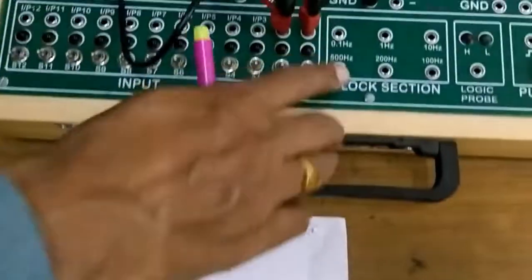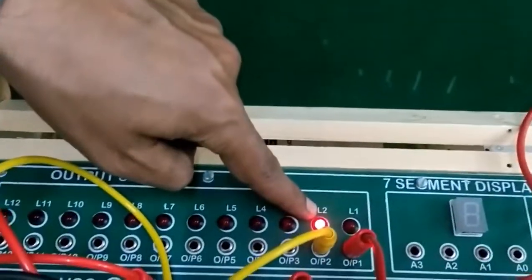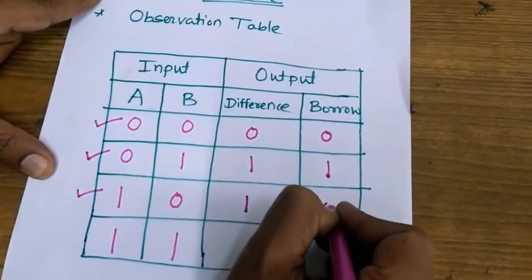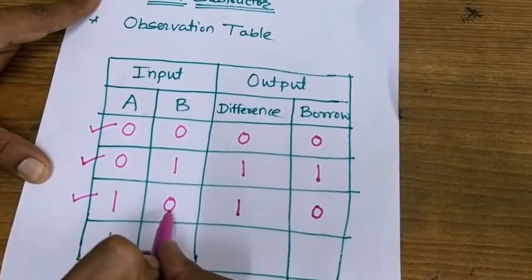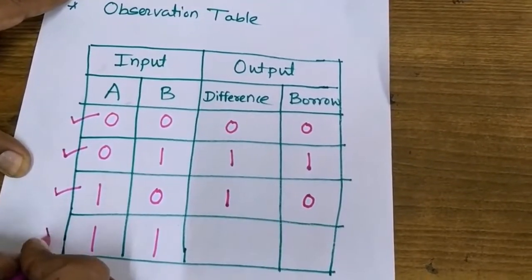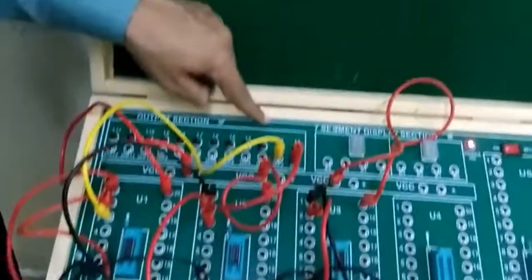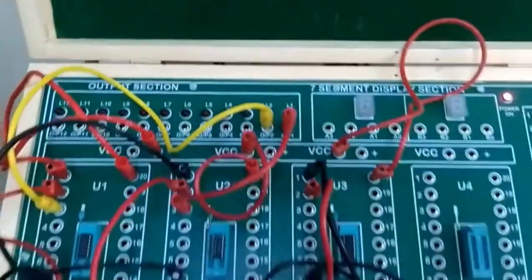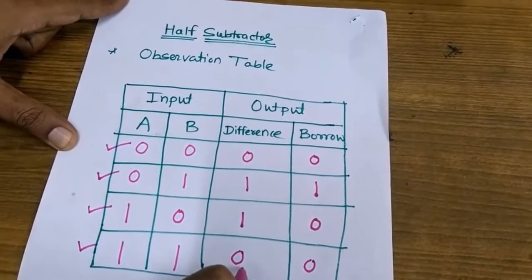Third combination: A=1, B=0. Difference is one and borrow is zero. Manually: 1 minus 0 equals 1, and since 1 is larger than 0 there is no borrow — third combination verified. Last combination: A=1, B=1. Difference is zero and borrow is zero. Manually: 1 minus 1 equals 0 with no borrow generated — all combinations verified.